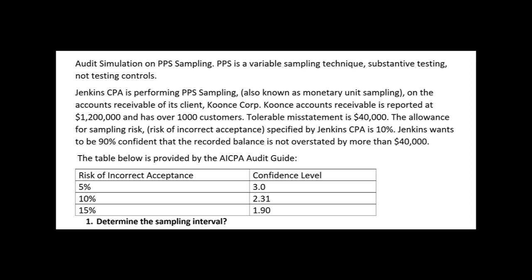A 10% risk of incorrect acceptance means they want to be 90% confident that the recorded balance is not overstated by more than $40,000. These assumptions help us determine sample size: accounts receivable is reported at $1.2 million, over a thousand customers, tolerable misstatement of $40,000, and 10% risk of incorrect acceptance. With PPS, before you can determine sample size you determine the sampling interval — something you won't see with attribute sampling.